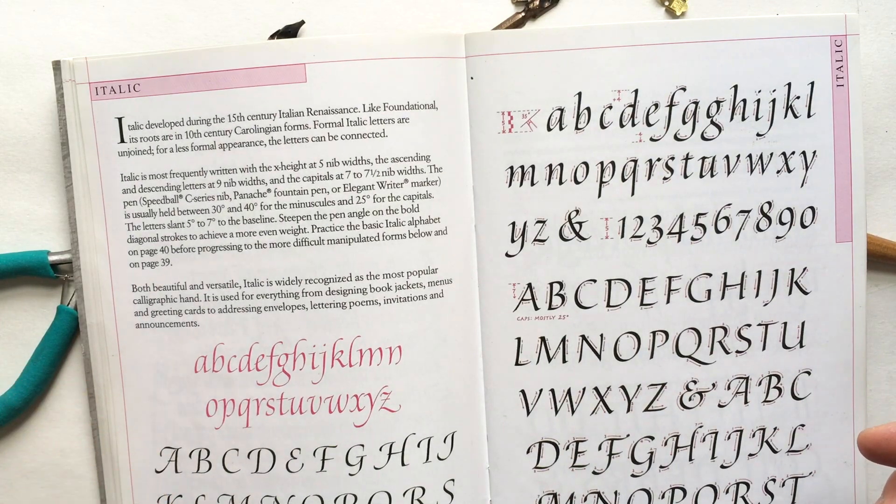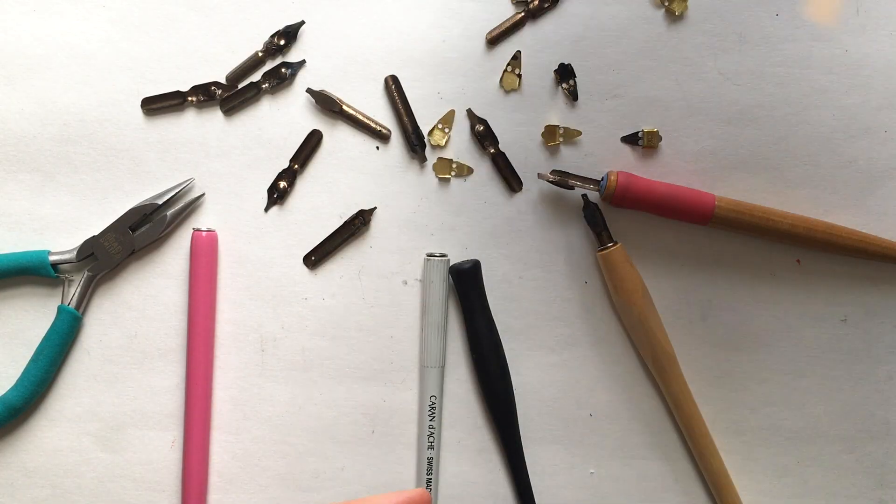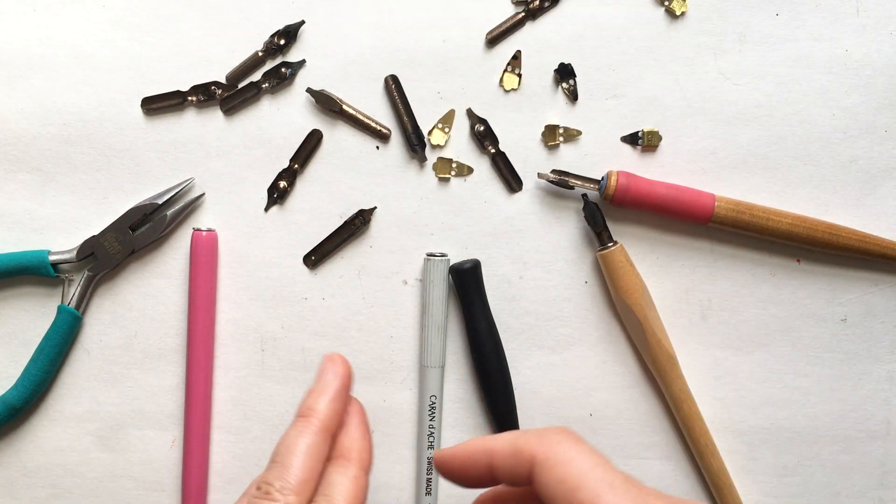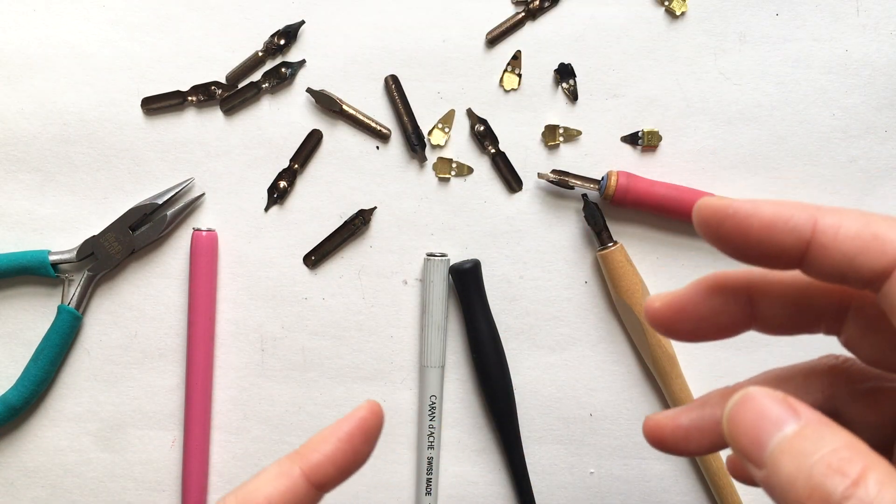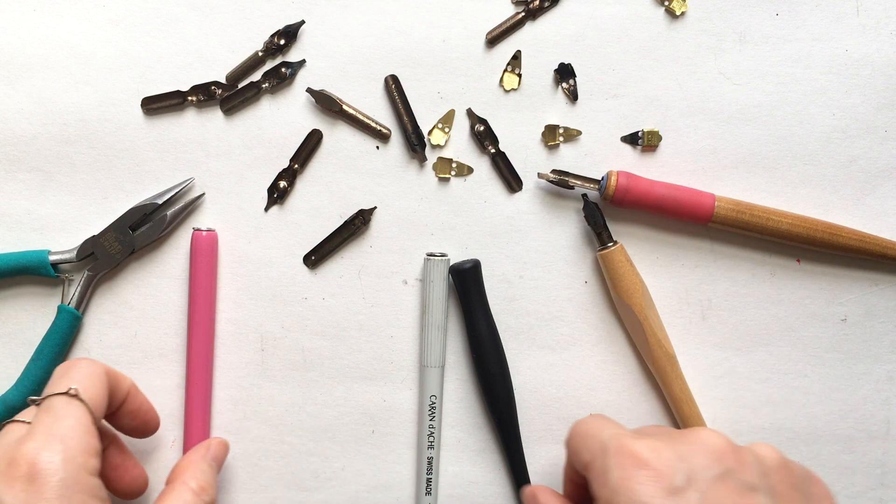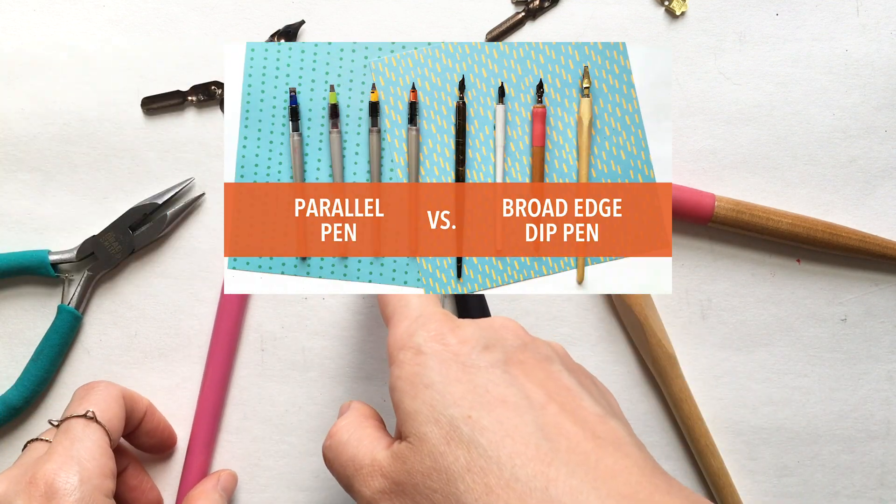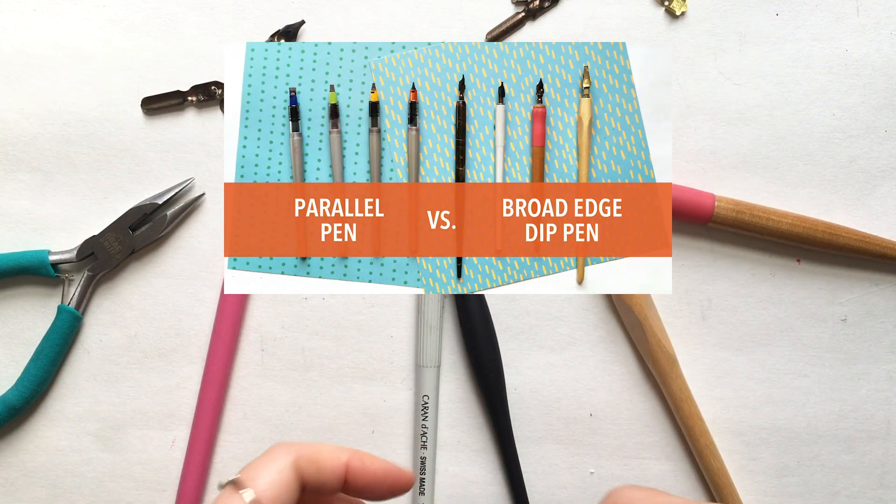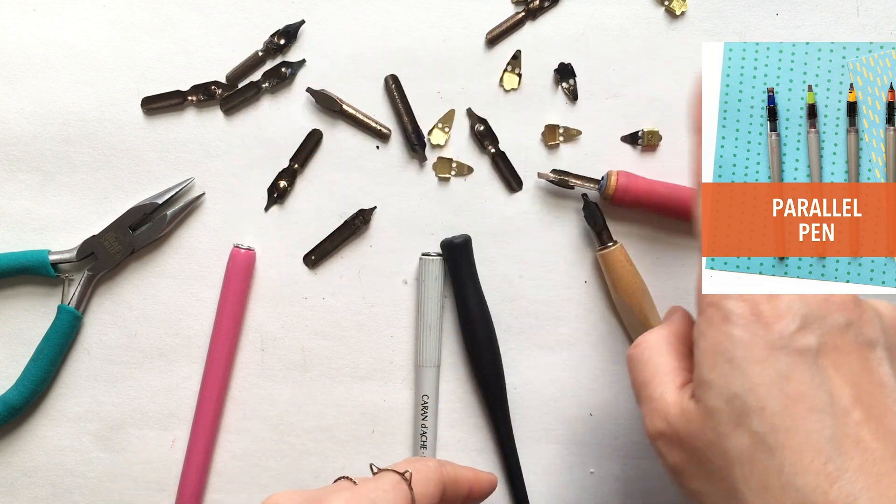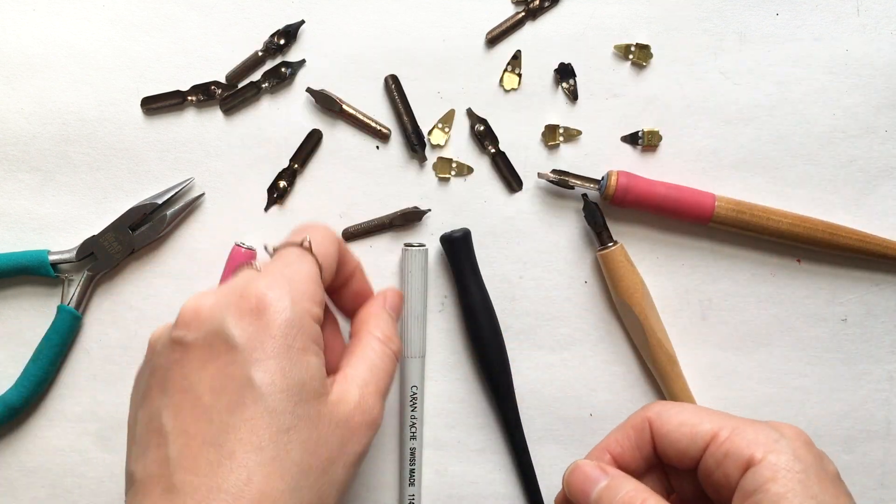If you're interested in learning these types of calligraphy, broad edge calligraphy pen is what you would need. There's also a different kind of pen called parallel pens, and I have another video showing the difference between these broad edge nibs versus the pilot parallel pen, so you can check out that video here.